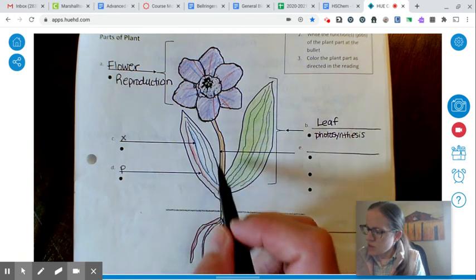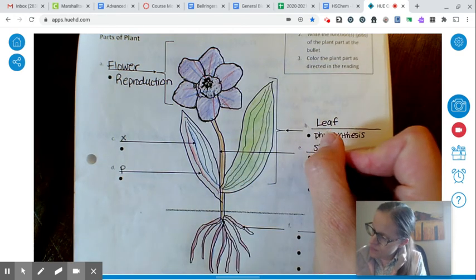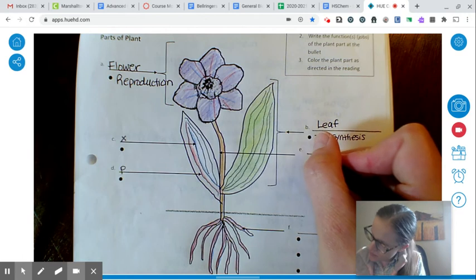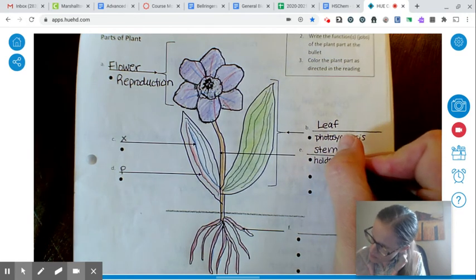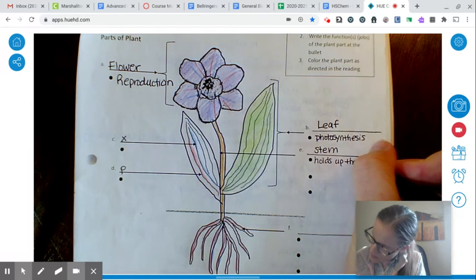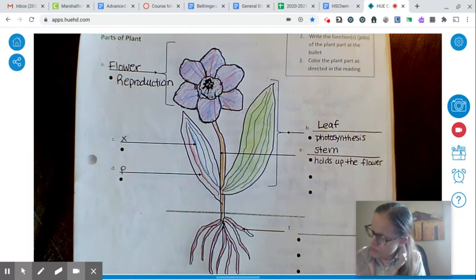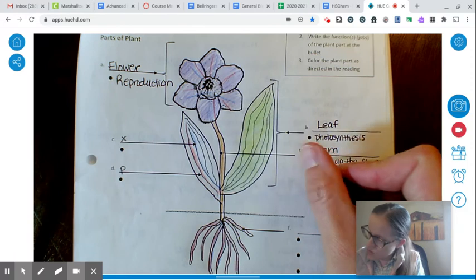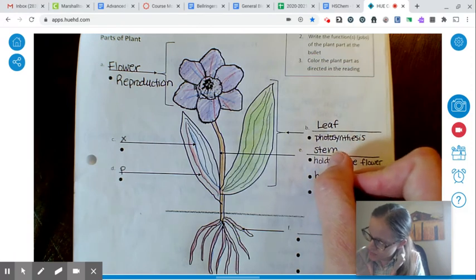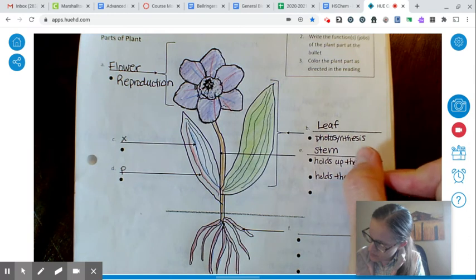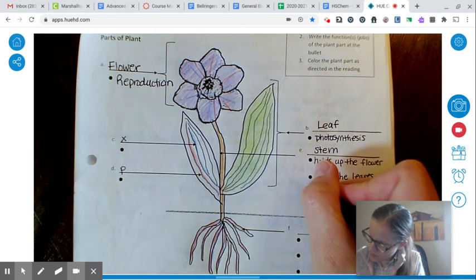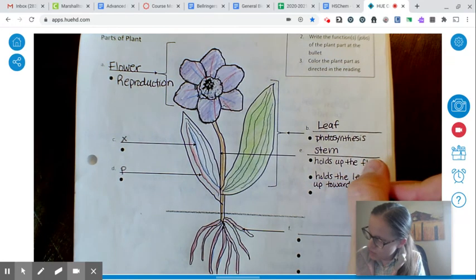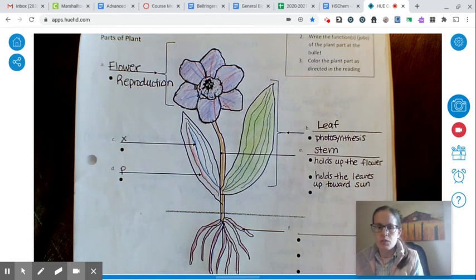And then this thing in the middle that you colored orange is the stem. The stem has three jobs. It holds up the flower so that the flower can do its job, reproduction. The stem also holds the leaves up so that the leaves can do photosynthesis. I'll say it holds the leaves up toward the sun, because they're trying to stretch up to the sun to do photosynthesis.